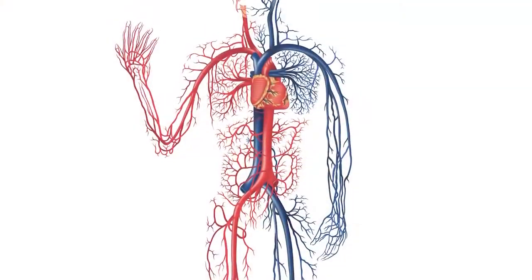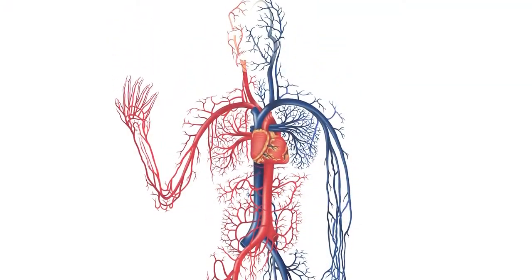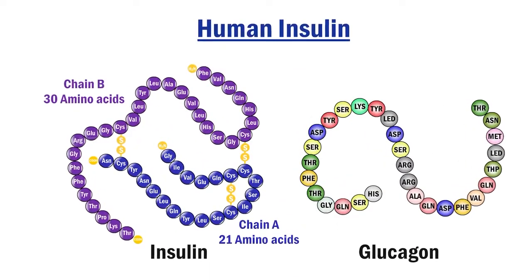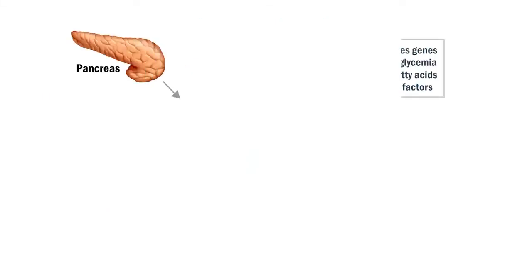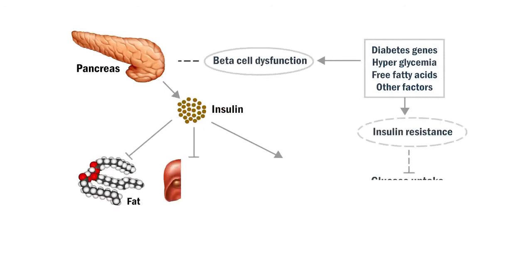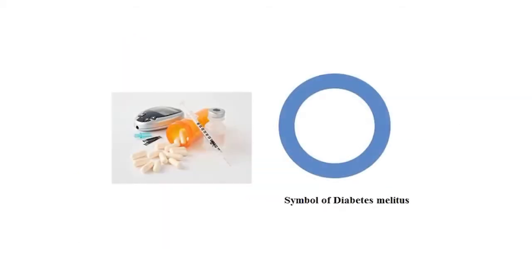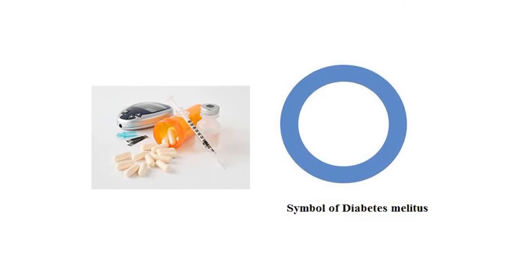The maintenance of blood glucose in our body is mainly controlled by hormones insulin and glucagon. A defect in insulin secretion, insulin action, or both results initially in an impaired glucose tolerance and causes hyperglycemia, which further leads to diabetes mellitus.